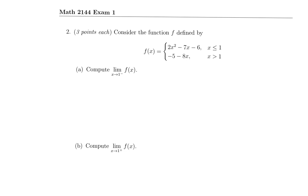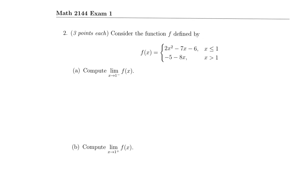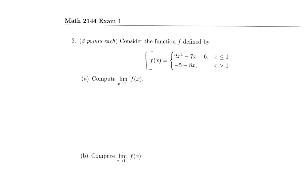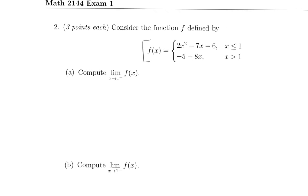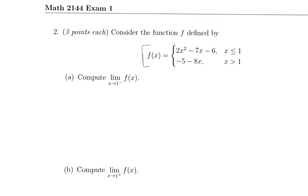In part two, starting with problem two, we're given this piecewise function and asked to determine some limits of that function. First, we're computing x approaching 1 from the left. Approaching 1 from the left means we're going from a lower number up to 1. I'm going to use this piece because it says x less than or equal to 1, so it covers all values to the left of that.